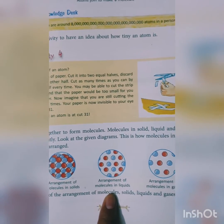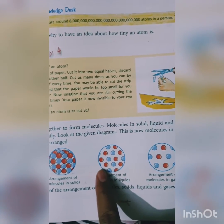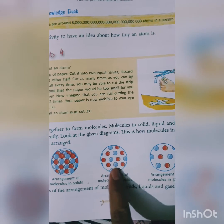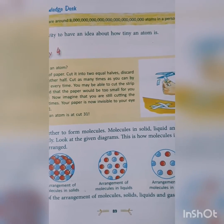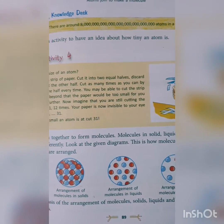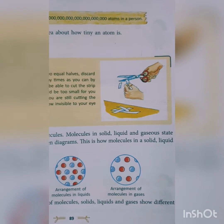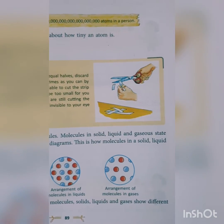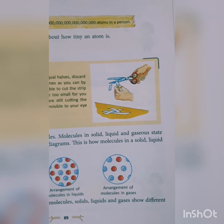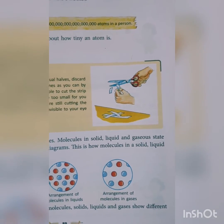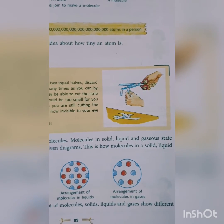Solids have a fixed shape because their molecules are very closely packed. Liquids can flow because the intermolecular spaces between their atoms or molecules are not so close. Gases flow freely because their intermolecular attraction is very less and the molecules of gases are loosely packed.